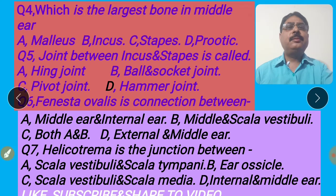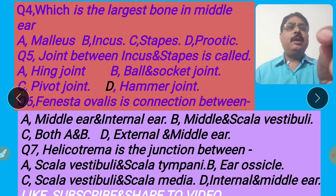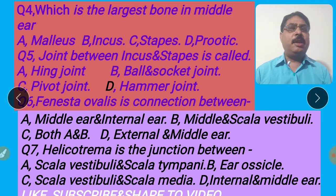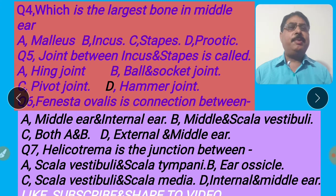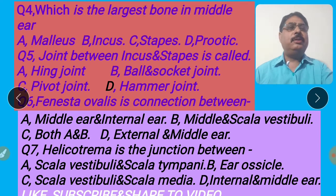Next question: The joint between incus and stapes is called — A, hinge joint; B, ball and socket joint; C, pivot joint; D, hammer joint. I shall provide a formula in the video. Malleus and incus contain a joint called hinge joint. A joint between incus and stapes is called ball and socket joint. So the right answer is B. Hammer joint is not any type of joint. I shall click B for the right answer.